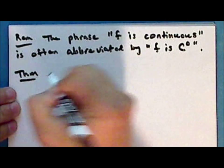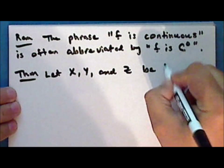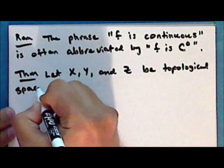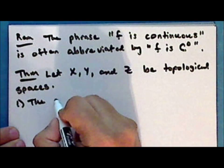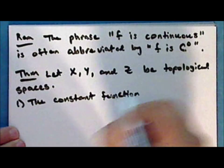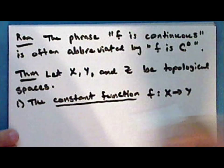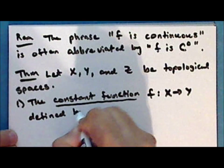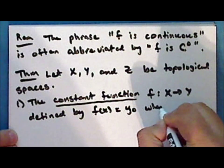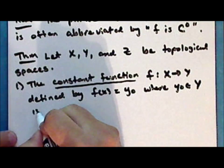Next we'll prove a new theorem. Let X, Y, and Z be topological spaces. The constant function F mapping X into Y, defined by F(x) equals the constant y-naught, where y-naught is a specific element in the space Y, is continuous.